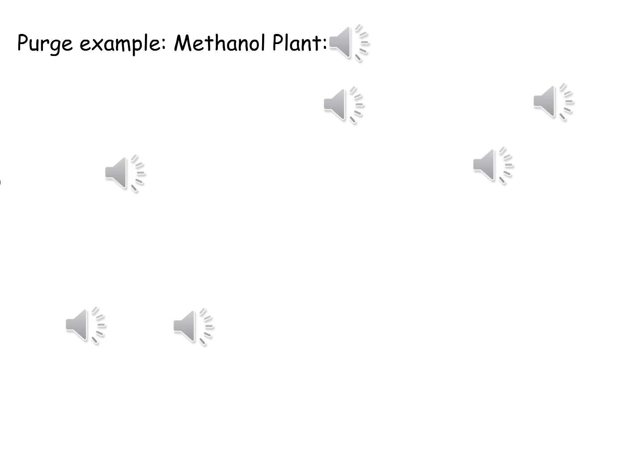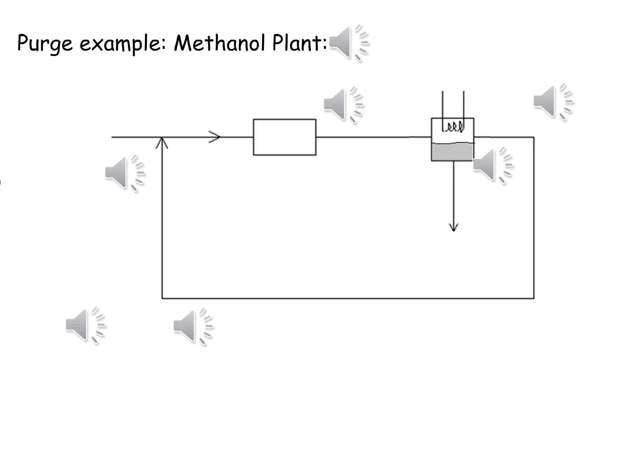Here you have a methanol plant which contains a purge. Carbon monoxide and hydrogen react to give methanol, as shown in the equation. However, the feed to the plant, in addition to carbon monoxide and hydrogen, also contains argon. Argon does not take part in the reaction and is therefore inert. This means that it just passes through the reactor and out the other side.